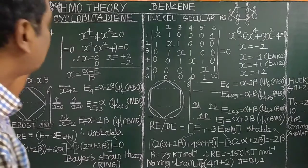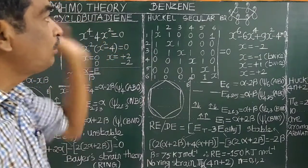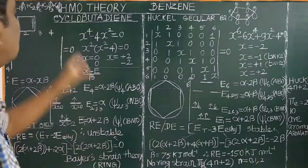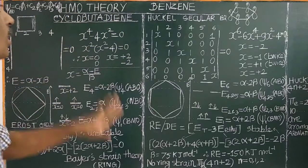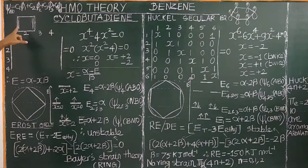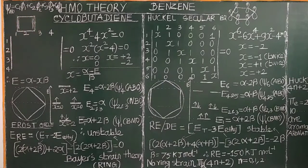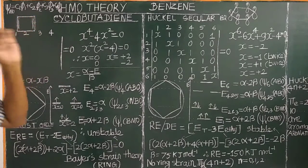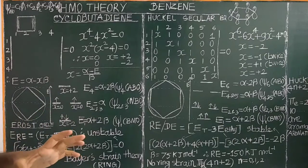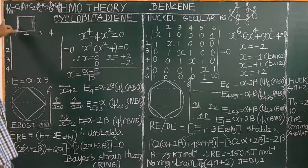Today we will look at cyclobutadiene. I am going to talk about 1,3-butadiene as a linear conjugated system and cyclobutadiene and benzene as examples of cyclic conjugated systems. This is the structure of cyclobutadiene. The molecular orbital is constructed from the atomic orbitals of the carbon atoms — specifically the 2pz carbon atom. Each carbon atom has one unhybridized 2pz orbital with an unpaired electron.